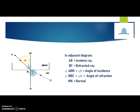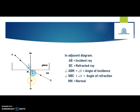Now consider the case where the ray of light travels from a denser medium like glass to a rarer medium like air. Here AB is the incident ray, BC is the refracted ray, and MN is the normal to the surface. I is the angle of incidence (angle ABM) and R is the angle of refraction (angle NBC). When refraction is from denser to rarer medium, the angle of incidence is less than the angle of refraction — the refracted ray BC moves away from the normal.